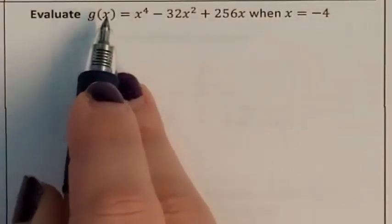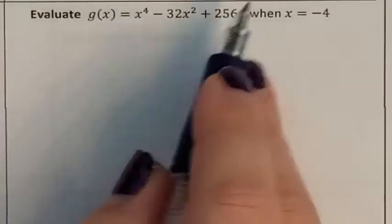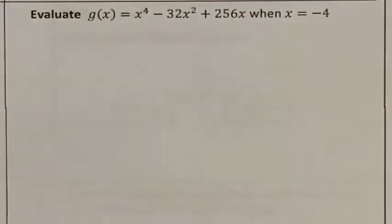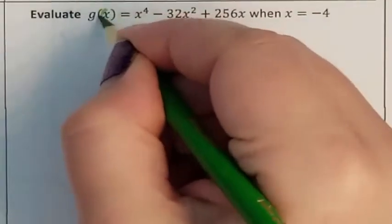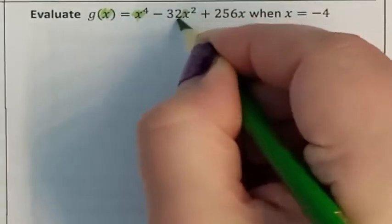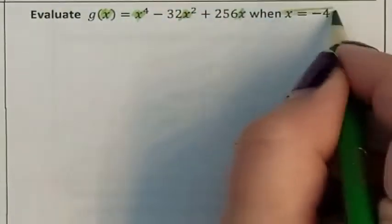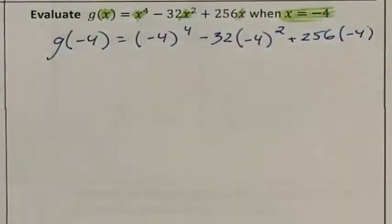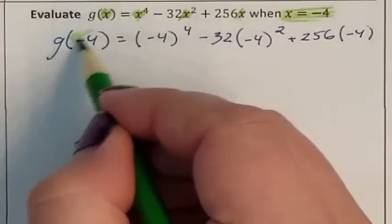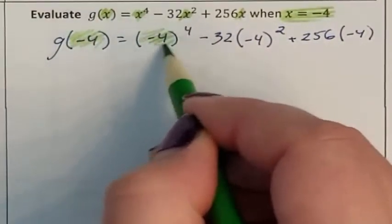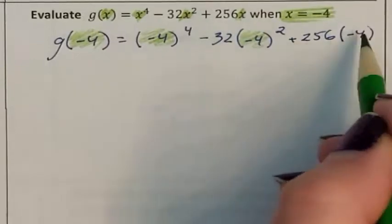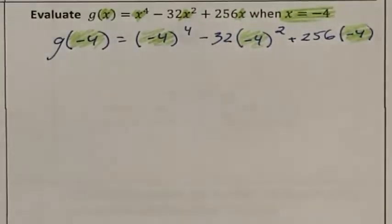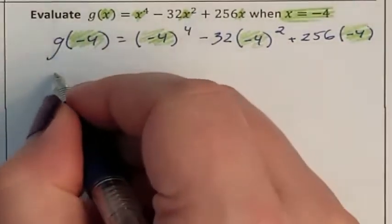You are being asked to solve the g rule at x. Here is your g rule, and they want it only at x equals negative 4. So all of these x values are going to be replaced with this negative 4. I am testing the g rule at negative 4.